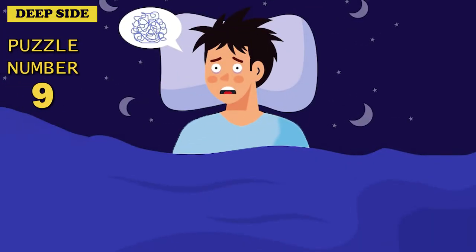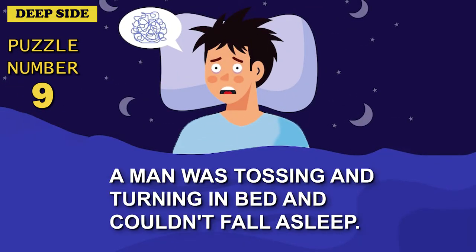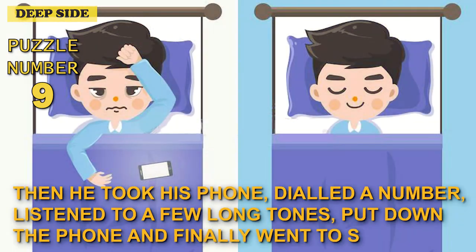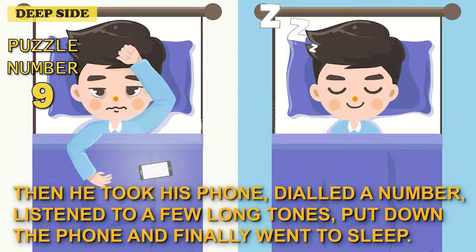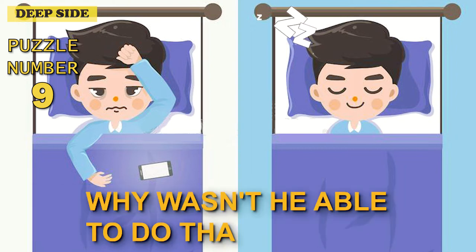Puzzle number 9. A man was tossing and turning in bed and couldn't fall asleep. Then he took his phone, dialed a number, listened to a few long tones, put down the phone and finally went to sleep. Why wasn't he able to do that before?